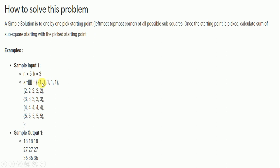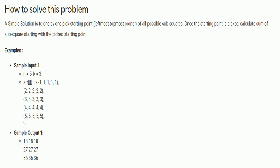From the first row, there are only 3 possible 3×3 sub-matrices. Then starting positions shift down a row, giving the second set of three sub-matrices, and then the third set. Starting from column index 4 or 5 is not possible because you cannot form a full 3×3 matrix — you'd only get a 3×2 or similar. That is why there are exactly 9 sub-matrices of size 3×3 possible in this 5×5 matrix.